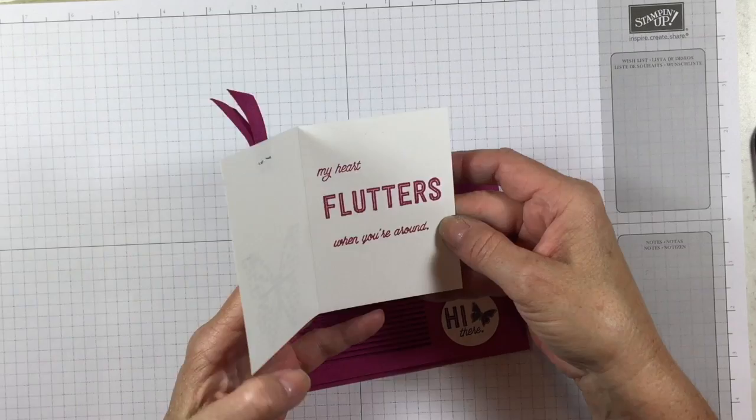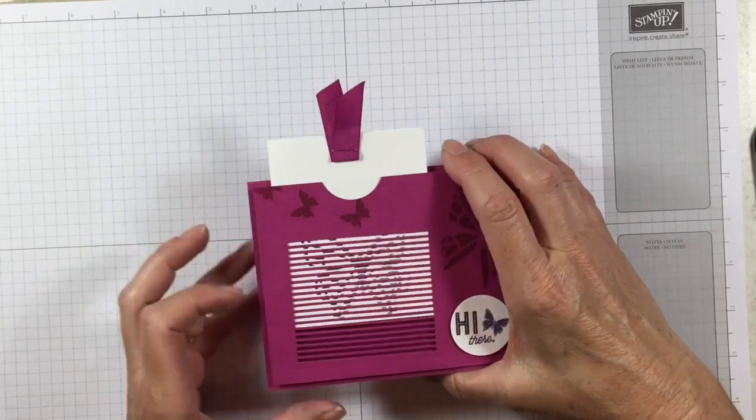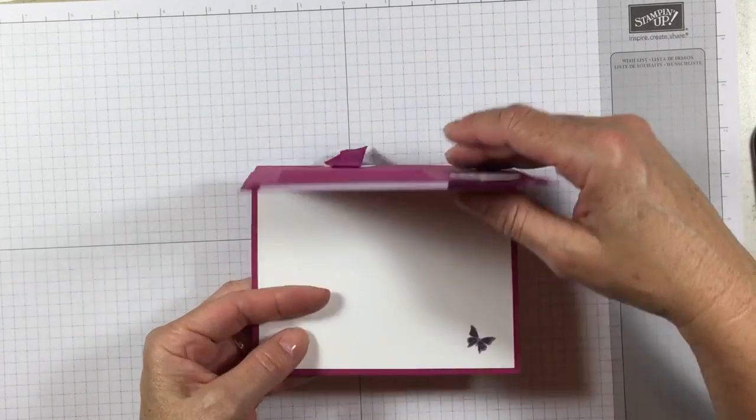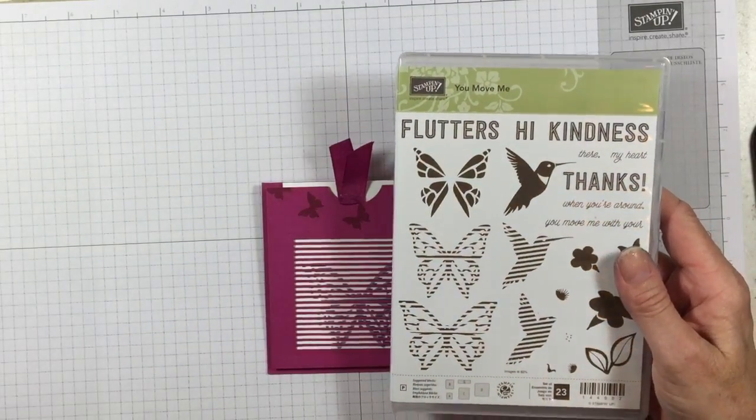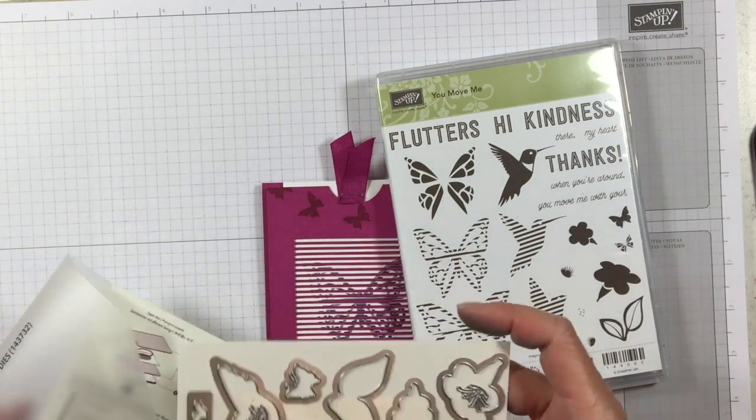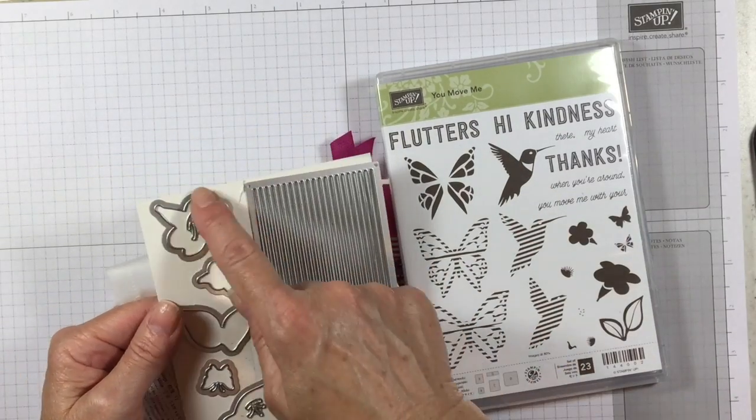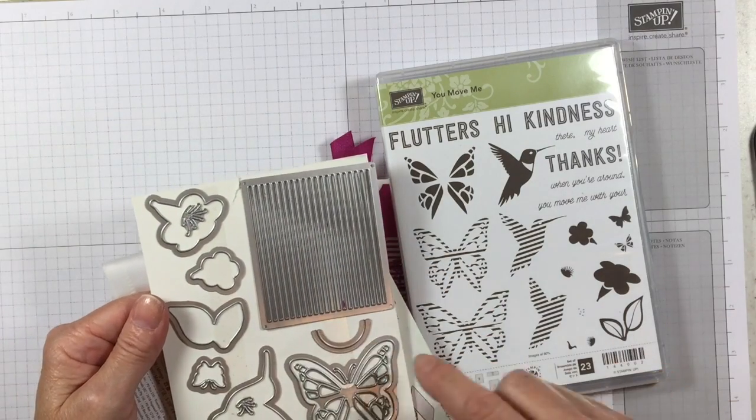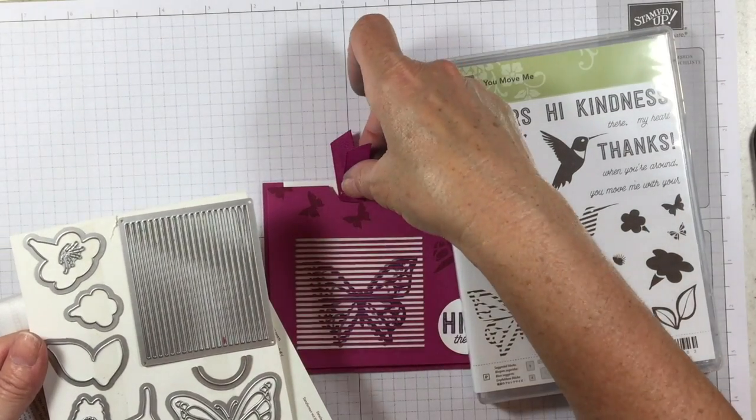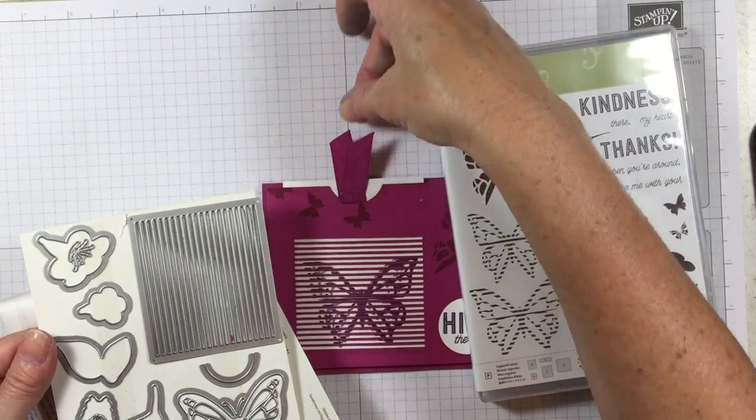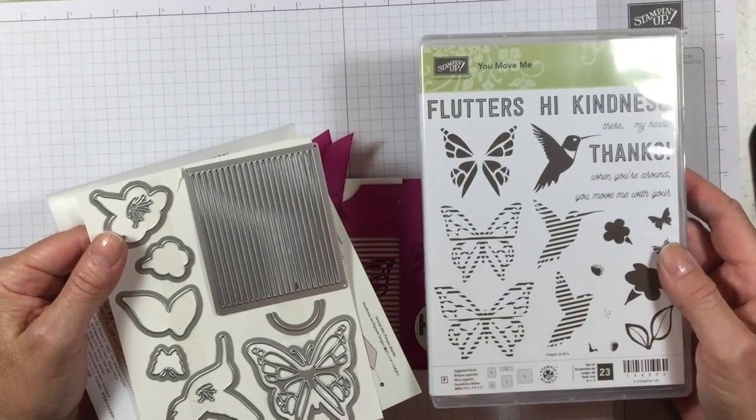So let's take a look at this. I've got a little card, and my heart flutters when you're around—isn't that cute? Let me show you the inside, there's a place for you to write. This is the bundle that I used, called You Move Me, and then we've got the Move Me thinlits with this beautiful butterfly, hummingbird, flowers, insides of flowers, leaves, and a little half circle that you can use to cut out the place for your ribbon pull. Super fun little bundle.